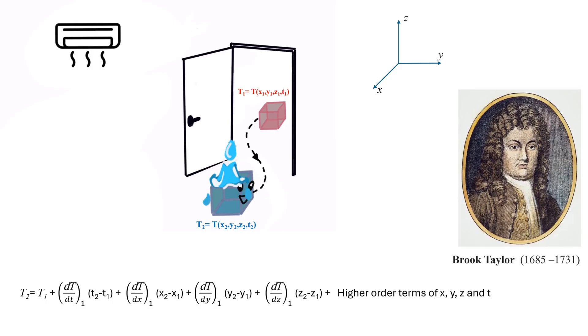Taylor series is a powerful mathematical tool that helps us predict how things change over time or space. The higher-order terms of the Taylor series can be neglected if the change is linear. This implies that only the first-order derivative is significant in the equation if you are considering a linear change.